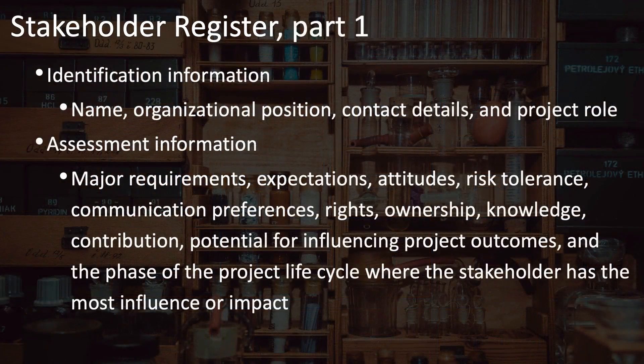The first category of information in your stakeholder register is information to identify the stakeholder — simple things such as their name, their position in the organization, how to contact them, and what their role is expected to be on the project.